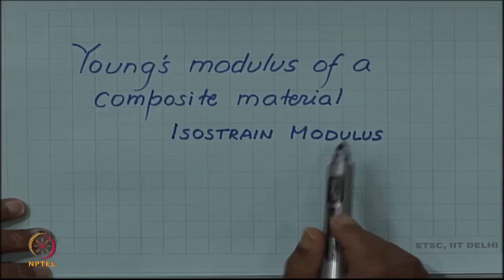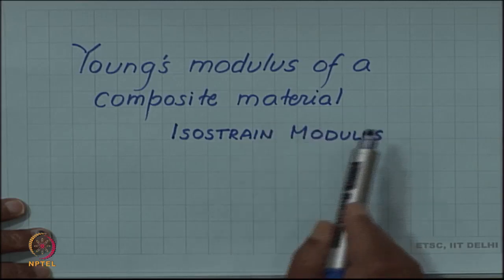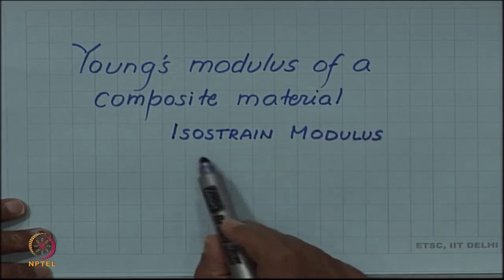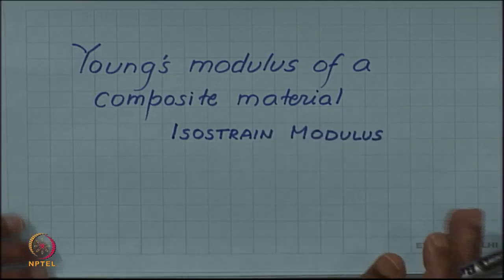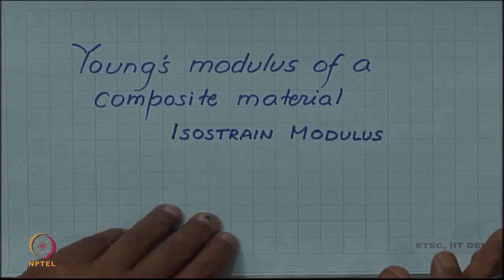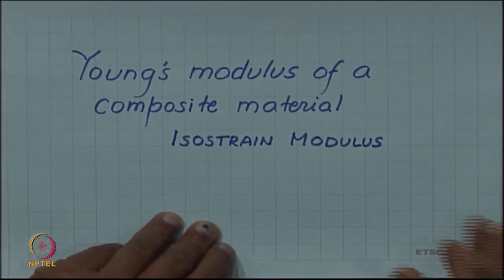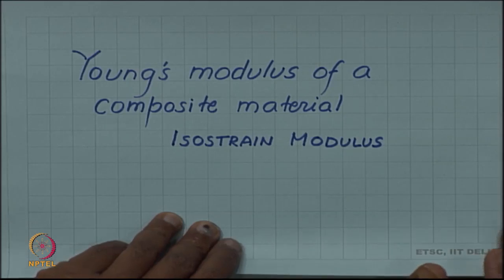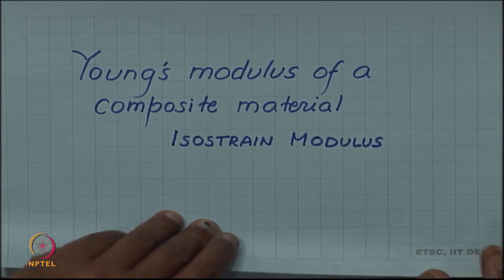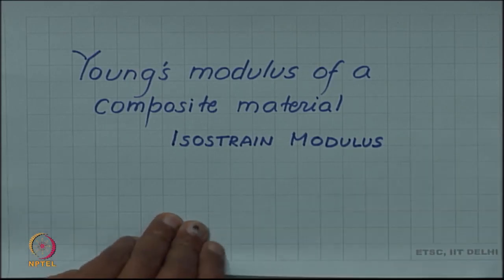Two standard models are used for calculation of the Young's modulus: one is the isostrain modulus and another is the isostress modulus. We will look at both of them.